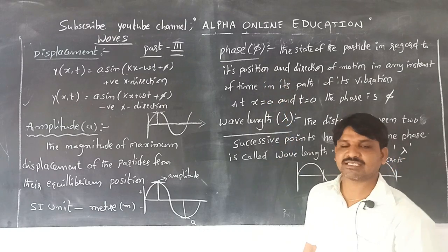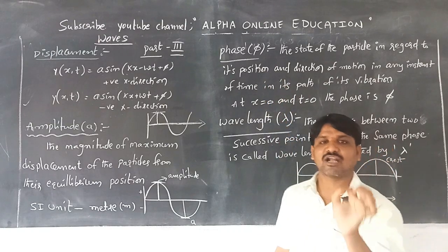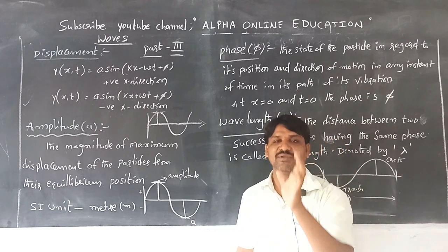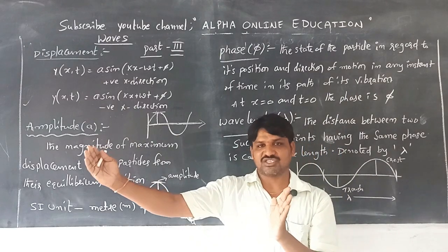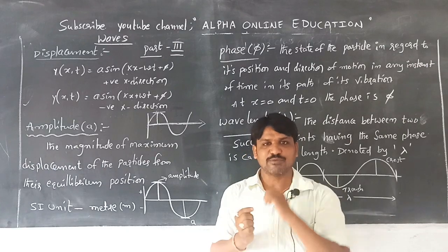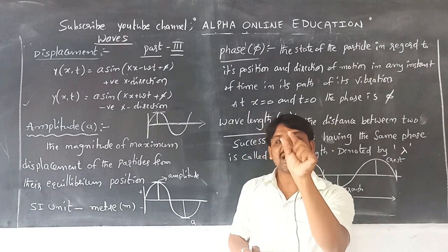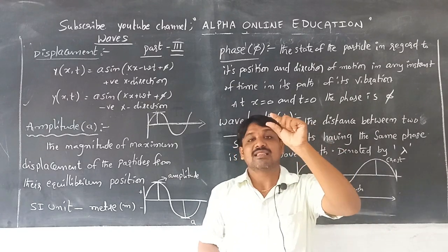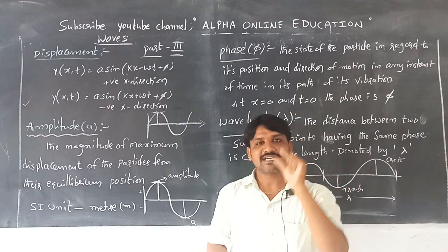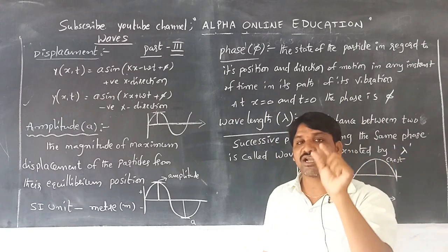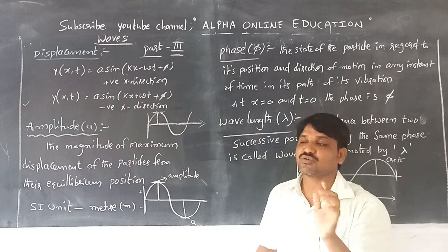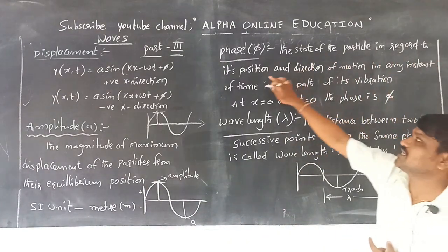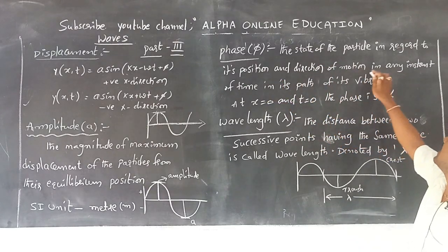The next parameter is phase. Phase means the state of the vibrating particle in regard to its position and time at any instant in its path of vibration. When a wave is travelling and particles are vibrating from their mean position, the position and time of the particle at some instant gives the phase of that particle. Phase is the state of the particle with respect to its position and direction of motion at any instant of time.